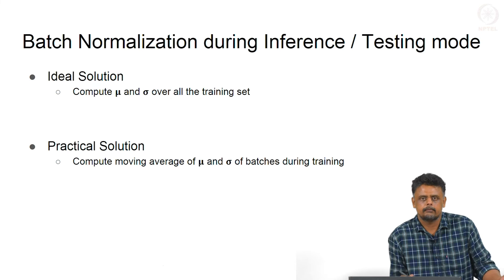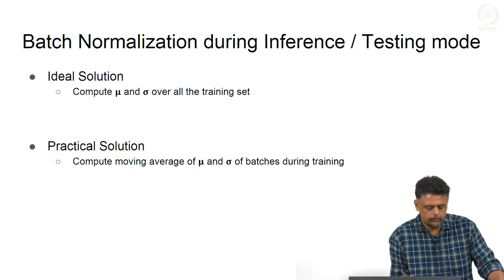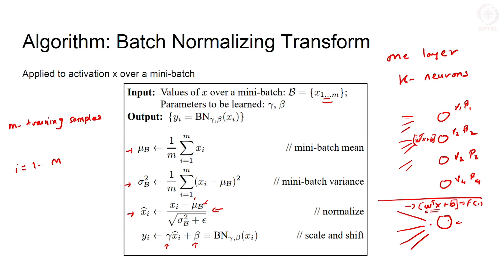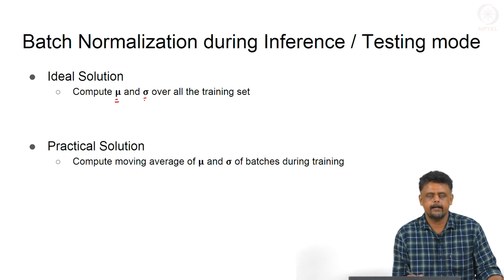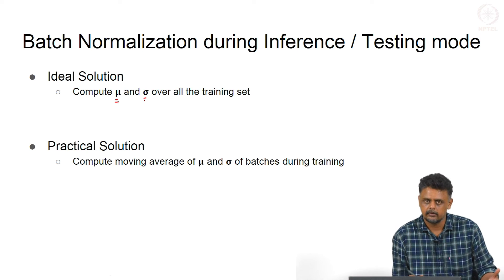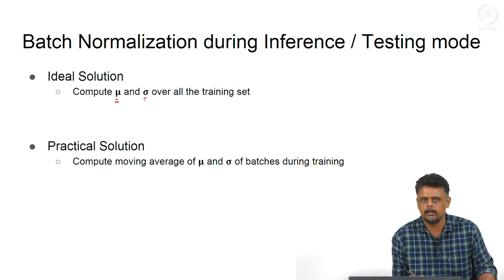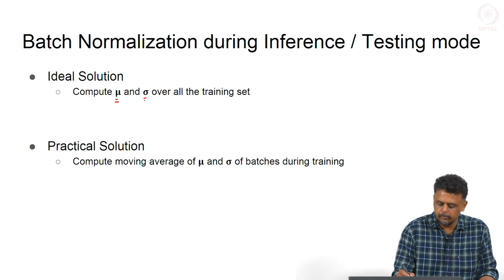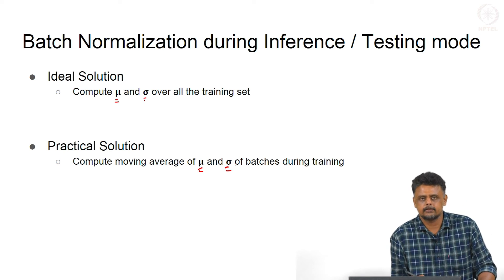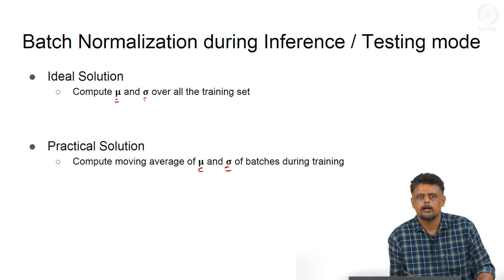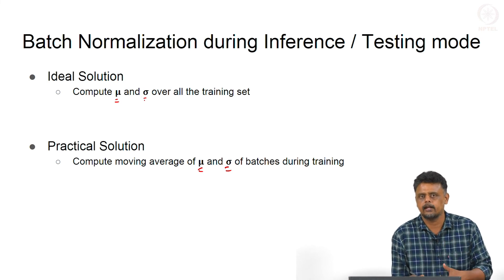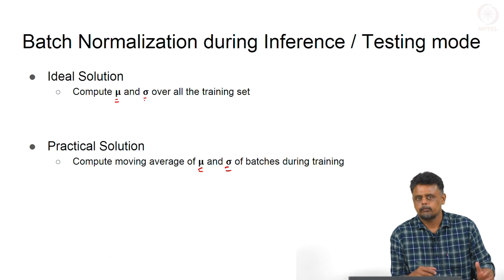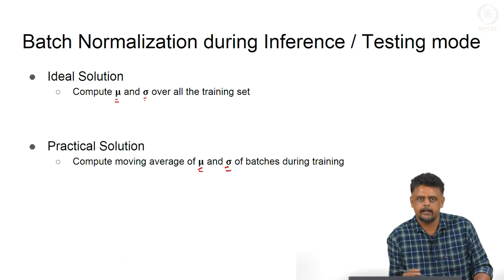Once training is done, how do you perform testing and inference? For testing you still need to calculate mu and sigma. You have the gamma and beta, but you still need to calculate mu and sigma. You can compute mu and sigma over the entire training set for every layer and every neuron. You have already converged on the appropriate values of gamma and beta. There are ways of computing mu and sigma as running averages — exponentially weighted averaging schemes are available. During testing, you calculate mu and sigma for every layer and every neuron, either by running the full training set forward pass or by maintaining a running average during training.